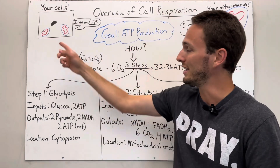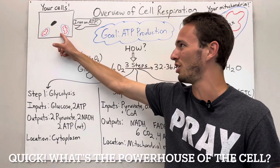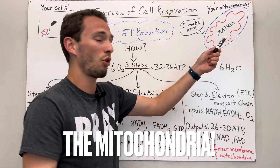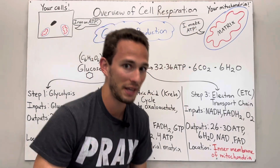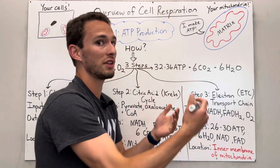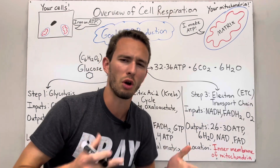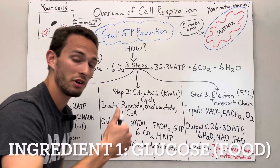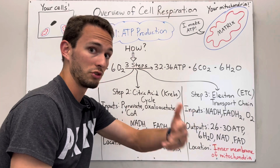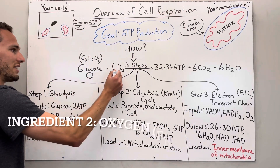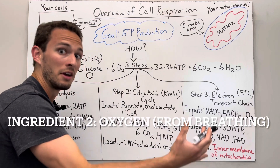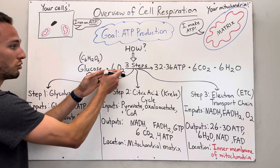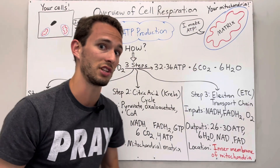So how does the cell make ATP? It uses a helpful little organelle inside the cell called the mitochondria. The mitochondria, which you may have heard of as the powerhouse of the cell, is actually going to produce ATP. However, in order to do this, we need some ingredients. You need glucose, which is the base unit of sugar that you eat — it comes from food and carbohydrates — and you also need to bring in oxygen by breathing.